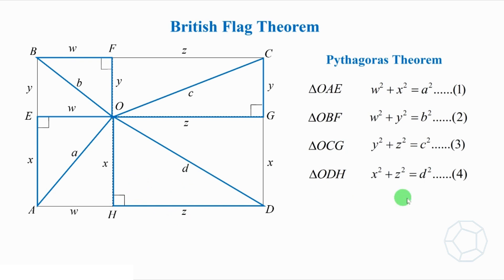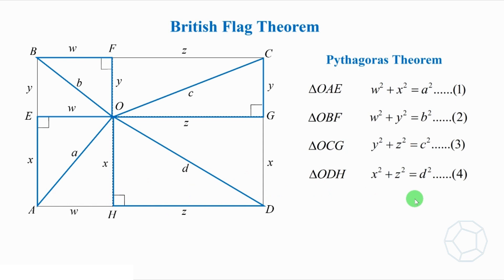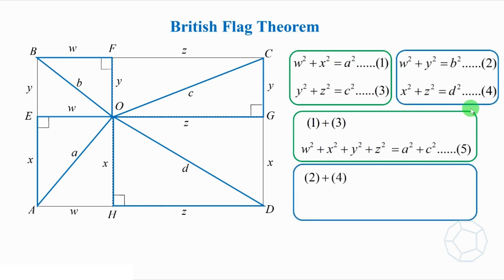Can you see any pattern behind? Let's add up equation 1 and equation 3. Then, we'll have w² + x² + y² + z² = a² + c². We call this equation 5. We do the same for equation 2 and equation 4. Therefore, w² + x² + y² + z² = b² + d². Let's call this equation 6.